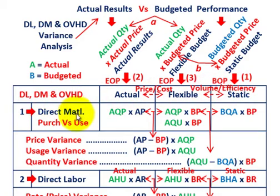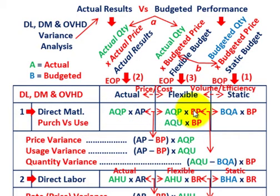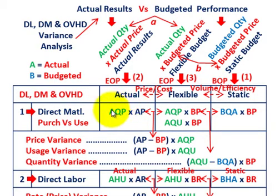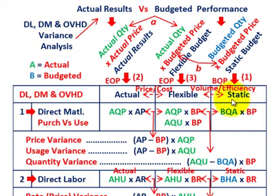For direct material, we're going to have both a purchase price variance and a usage/quantity variance. For the actual amount, we take actual quantity purchased times actual price. Everything is color coded: actual amounts are shown in green, budgeted amounts in red, and actual prices in dark blue. For the flexible amount, we use actual quantity purchased times the budgeted price per unit, where the budgeted price comes off the static budget.